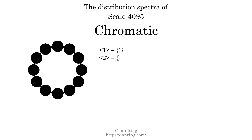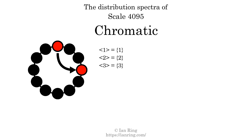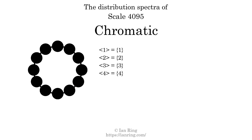The generic interval of two scale steps has just one specific interval size: two semitones. Spectrum width: zero. Three scale steps: three semitones, width zero. Four scale steps: four semitones, width zero. Five scale steps: five semitones, width zero. Six scale steps: six semitones, width zero.